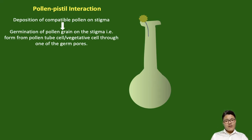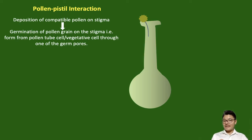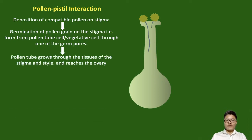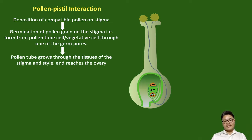Within the pollen grains there are tiny regions where there is no deposition of sporopollenin — these are known as germ pores, tiny holes through which the pollen tube grows. After germination, there is growth of the pollen tube through the tissues or cells of the style of the pistil and then into the ovule.